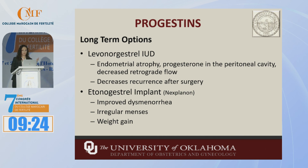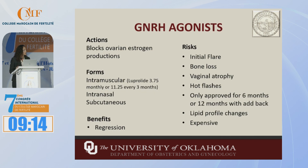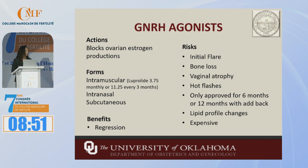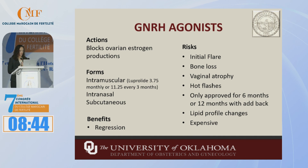Some women say they don't care that they're bleeding every day because their pain is better, and so they're okay with it. Next are the GnRH agonists. This upregulates estrogen in the beginning, so patients will get an initial flare of pain and symptoms, but then with time it essentially blocks ovarian estrogen. This is the treatment that has been proven to cause regression of endometriosis.